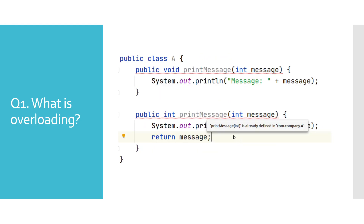Here we have an invalid example where the only difference between those two methods is in their return type. As mentioned before, return type is not part of the method signature, and Java does report a compile time error in this case.